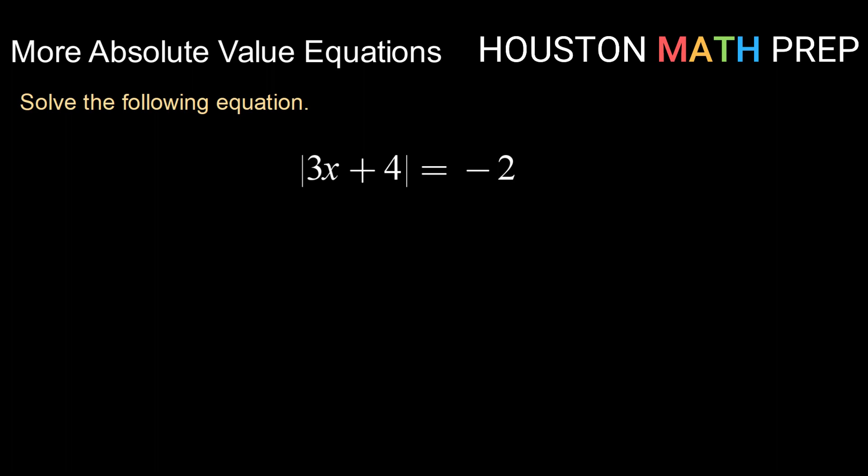Remember that this equation is asking what values of 3x plus 4 have a distance of whatever number is here from 0. So, this negative 2 here is representing distance.